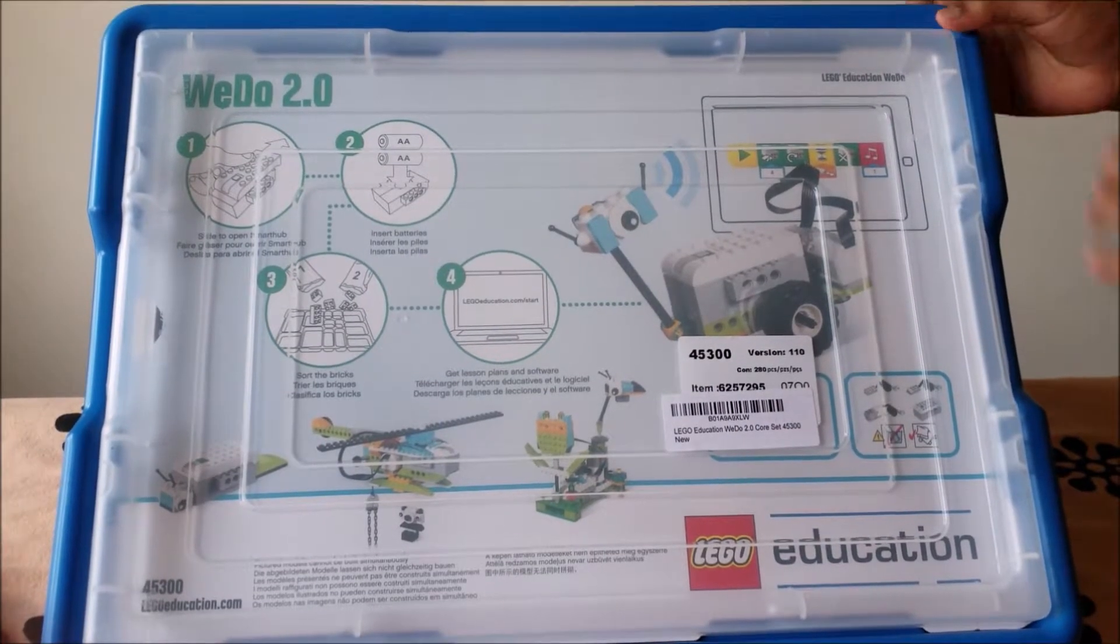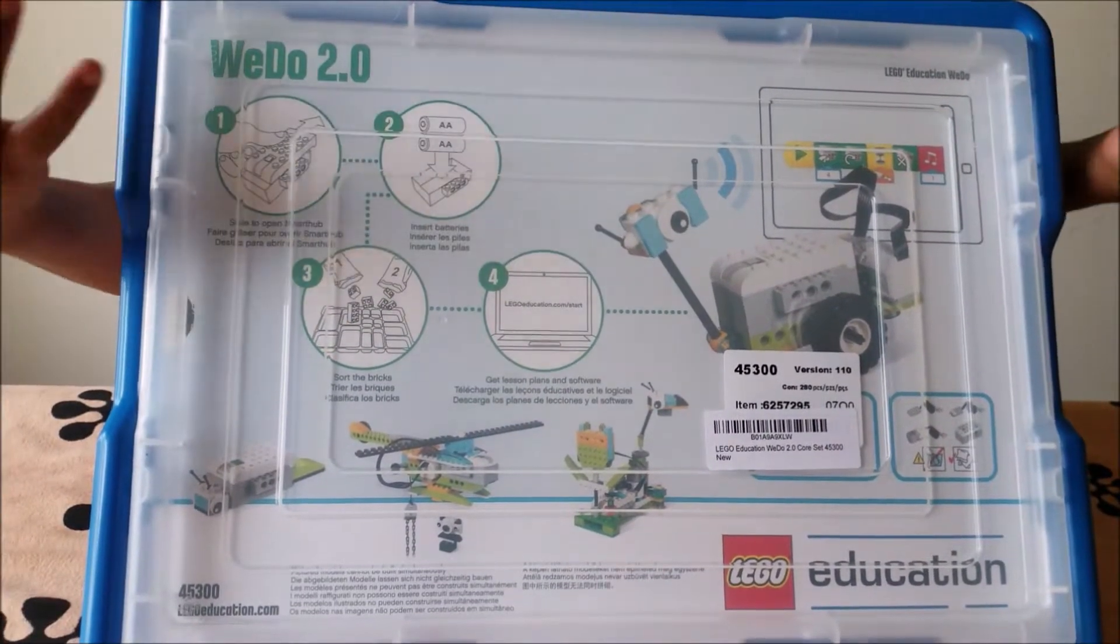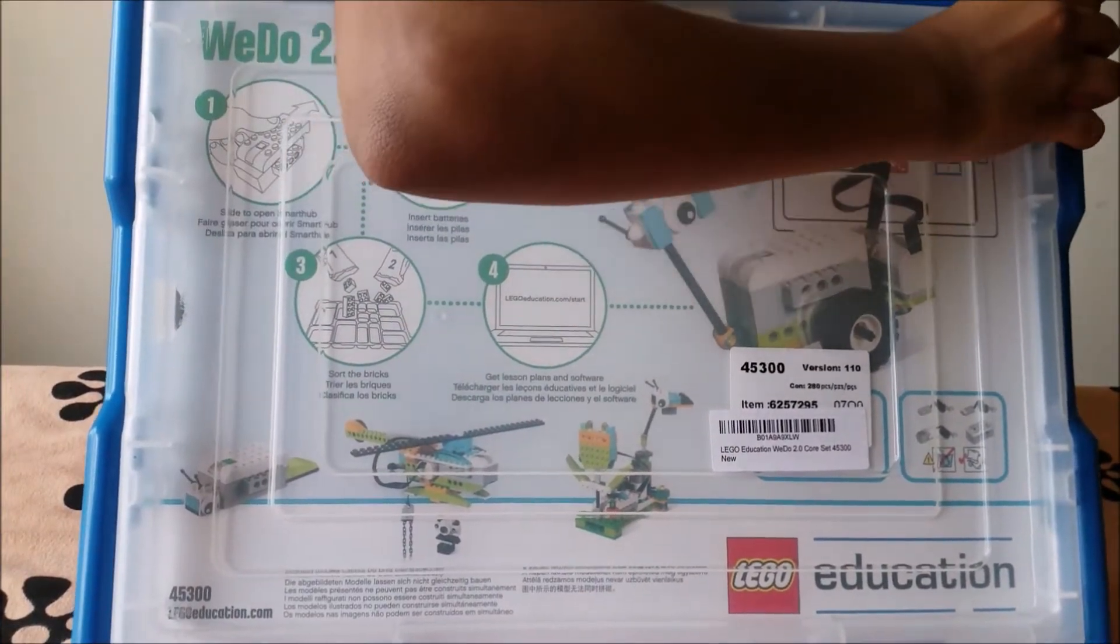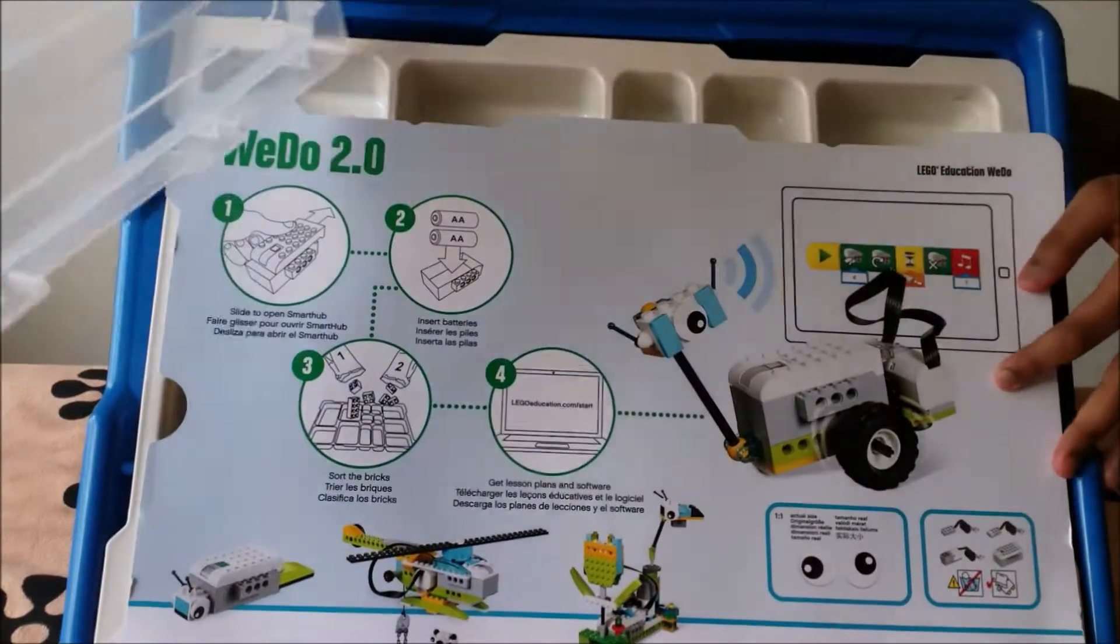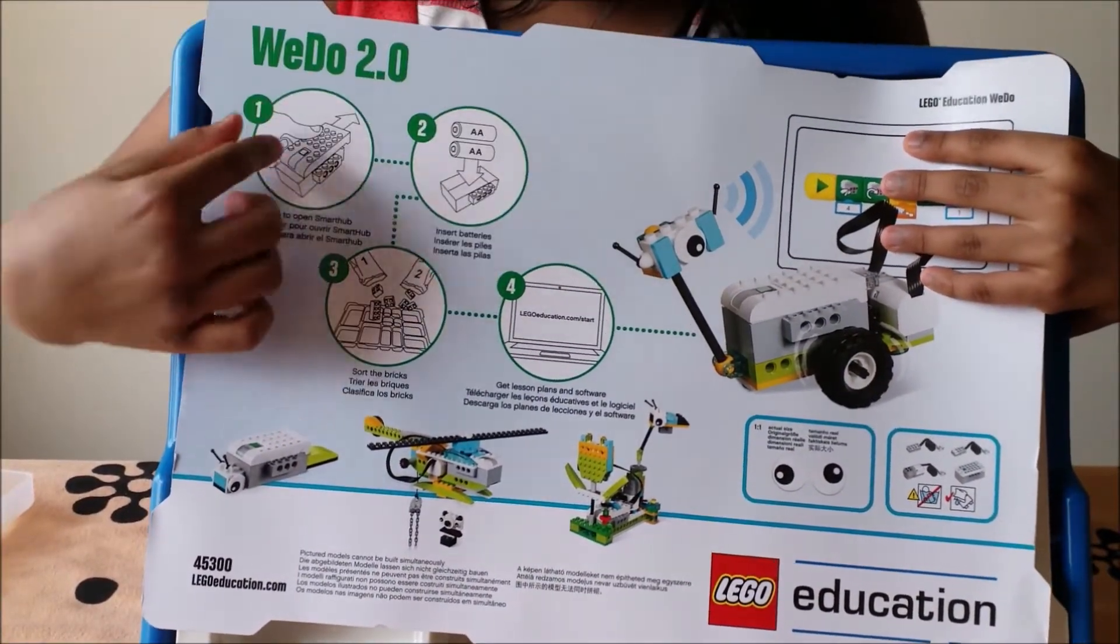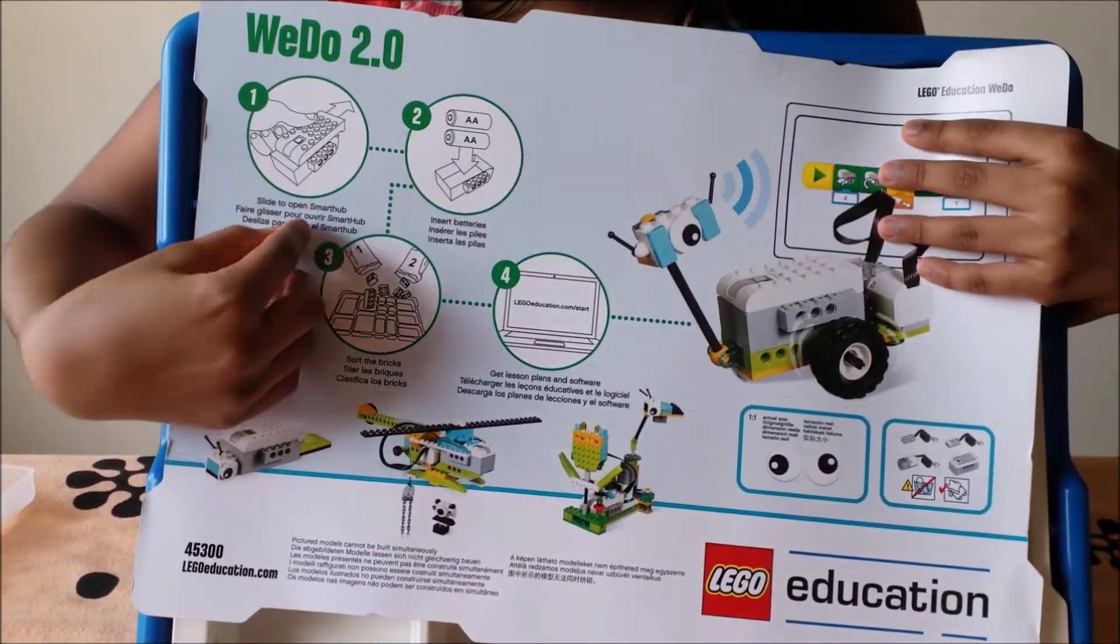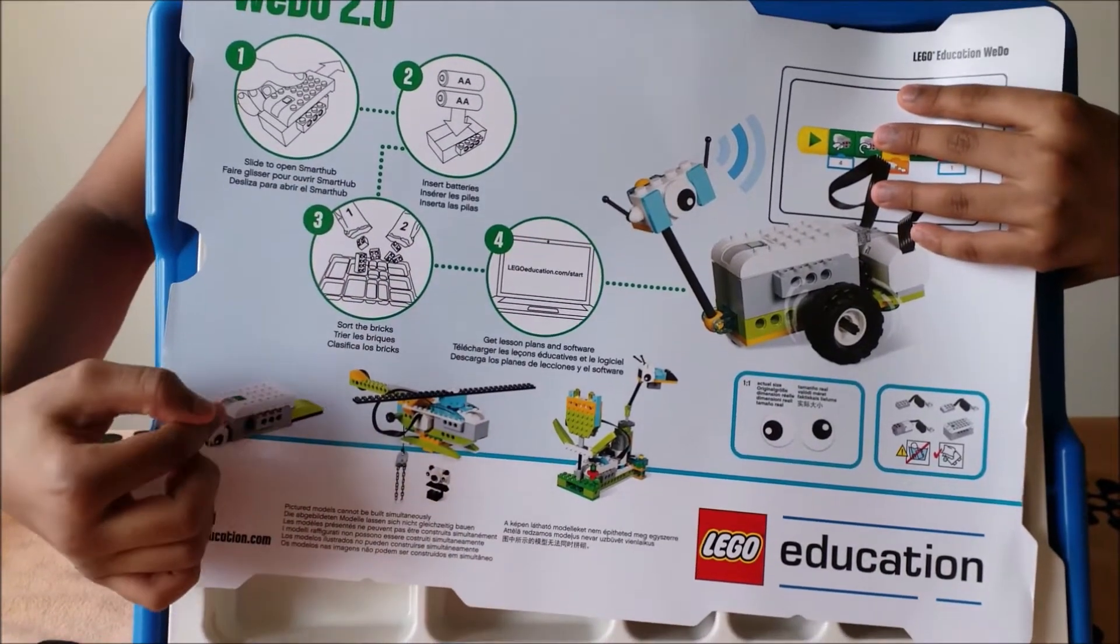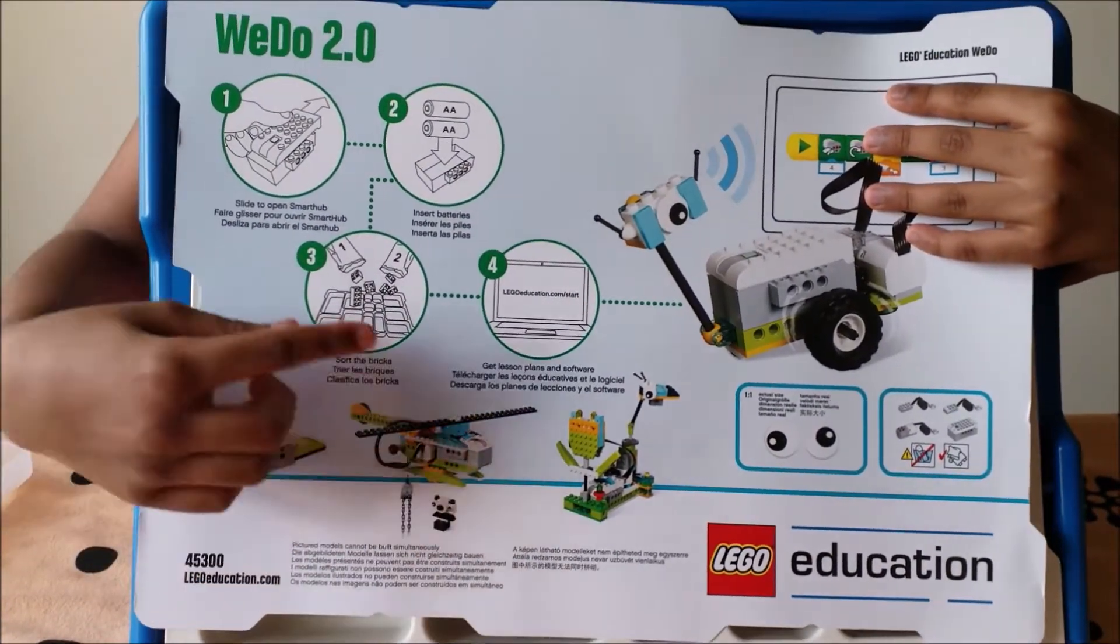Let's open the box. This is how you'll get the package. Let's open this. Over here it shows the steps for putting the battery in the smart hub, and these are some things you can make with this kit.